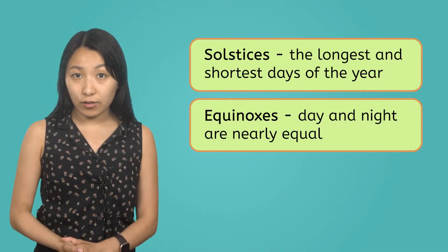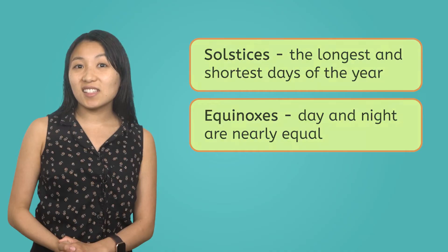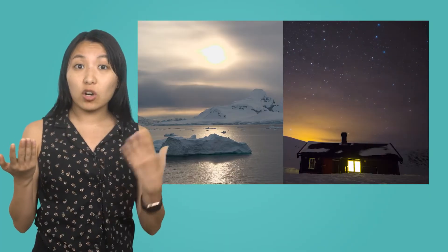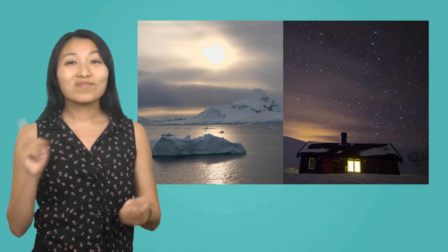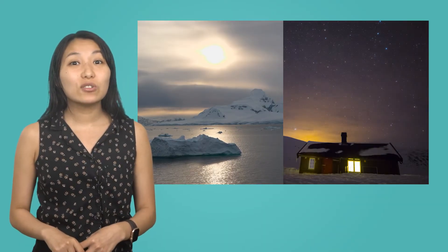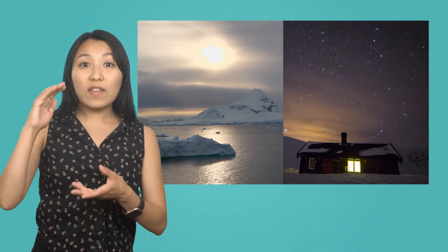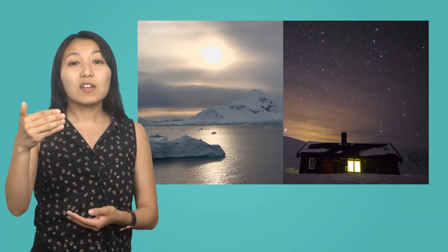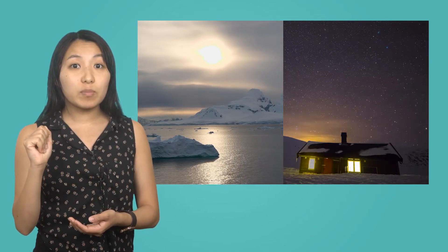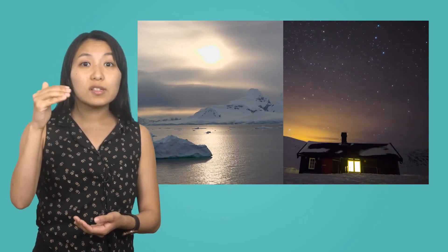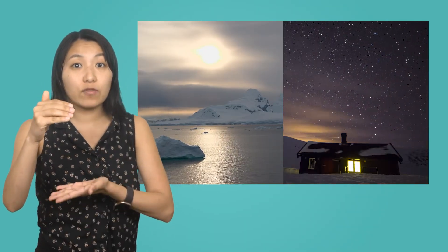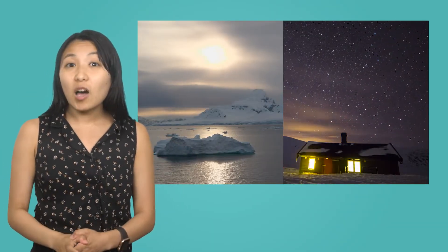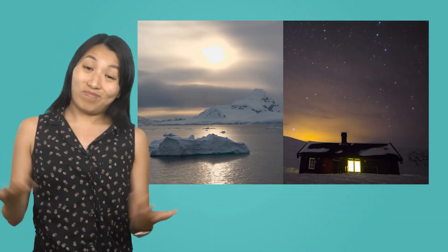And I think we might have just uncovered the answer to our question: why is it daylight at one pole and dark at the other at the same time of day? It's because of the way the Earth is tilted during the solstices. When the North Pole is tilted toward the Sun during the summer solstice, it receives constant daylight, resulting in it being daylight at midnight. And during the summer solstice, the South Pole is tilted away from the Sun, resulting in constant darkness even at noon. The opposite happens during the winter solstice. Pretty neat, huh?